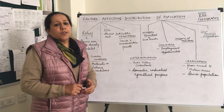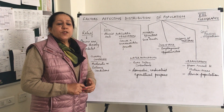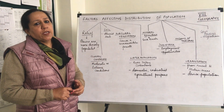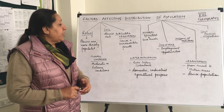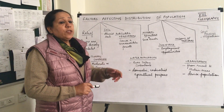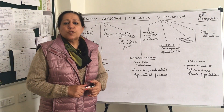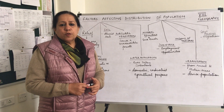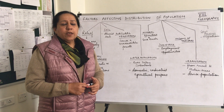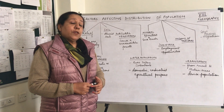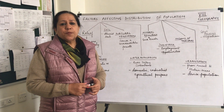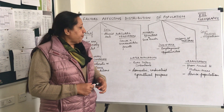Mineral resources. Areas wherever minerals are found will attract population, and that is why the gold rush saw such heavy migration of people in Australia because of the discovery of gold in an otherwise barren land.